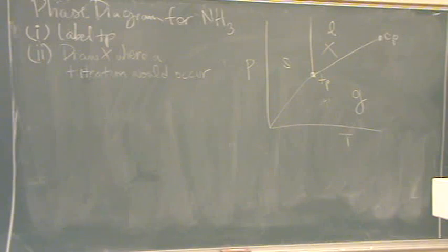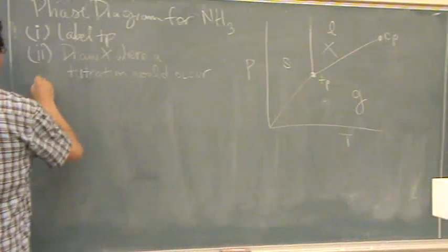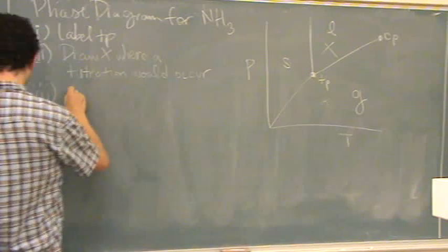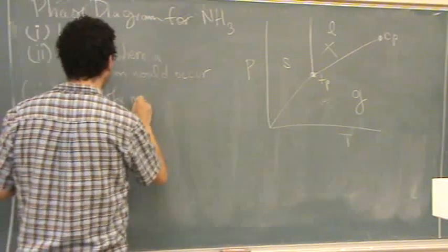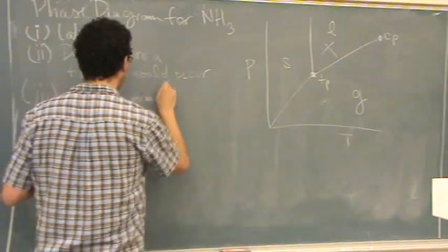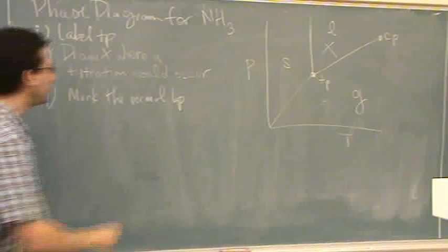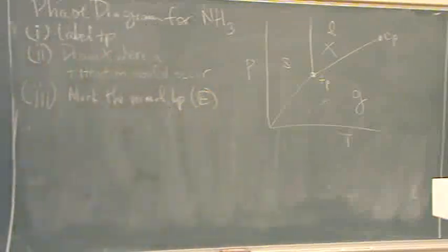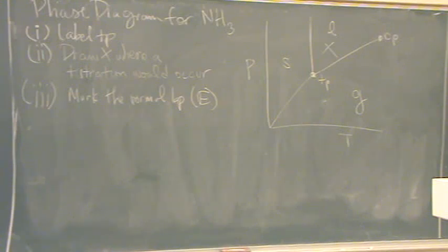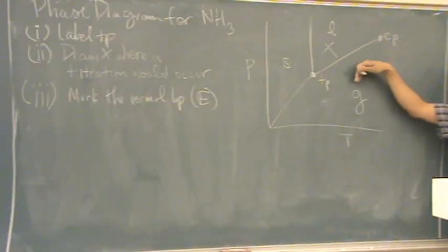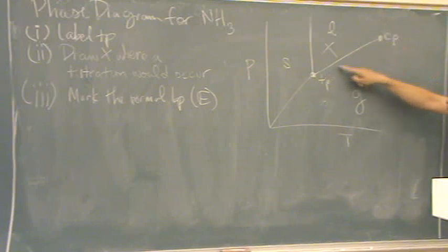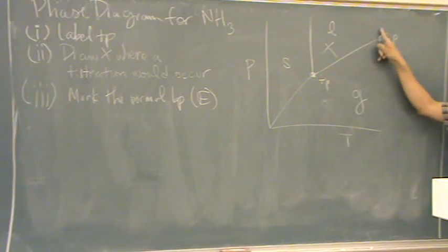Part III, triple I, mark the normal boiling point with the letter E. How are you going to find out? Well, the boiling point, that's where you're going between liquid and gas. So you better have a letter somewhere on this line. That's the only place something can boil. If it's not there, you really went crazy.